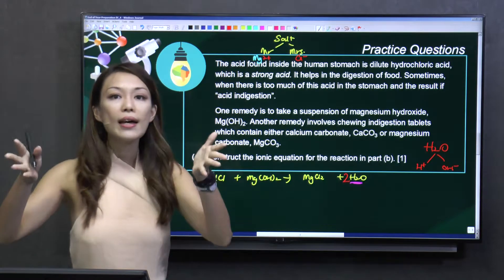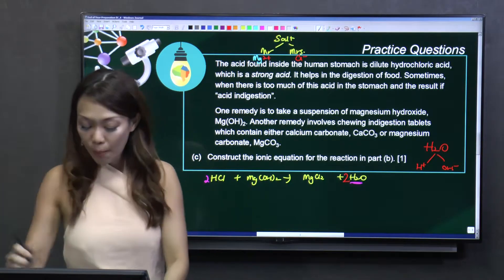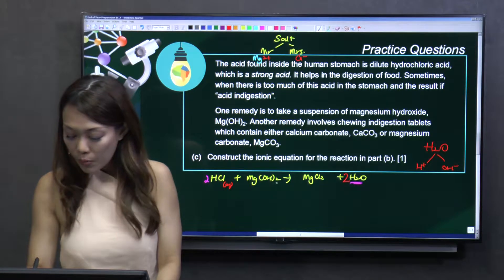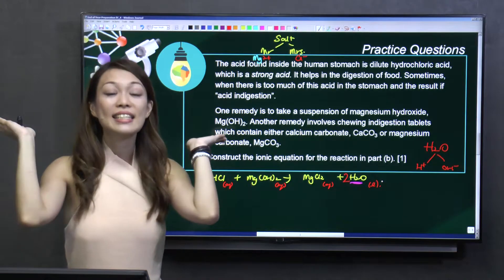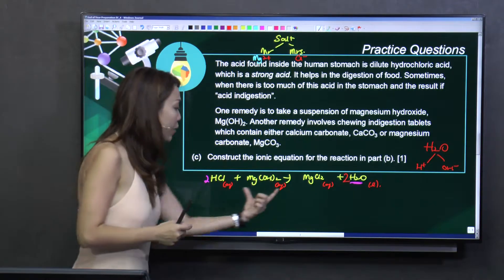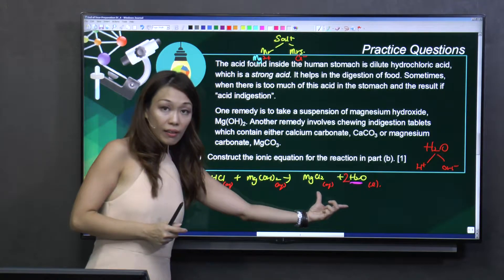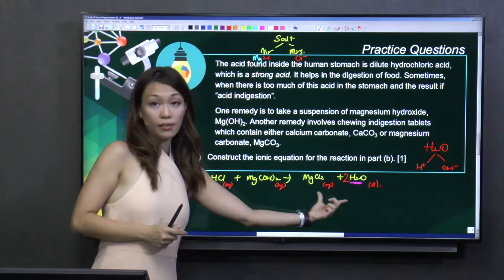Now, ionic equation only happens in what? Aqueous, right? So you need to write down the state symbol. Why do I need to say that it's aqueous? Because under ionic equation, you need to cancel the same ions. Now, you'll only cancel those that are in aqueous state. All right. So who are the aqueous state? This one, this one, and this one here.